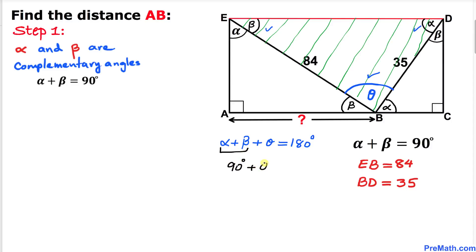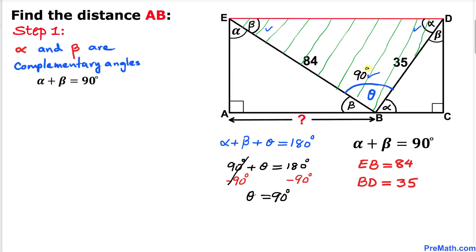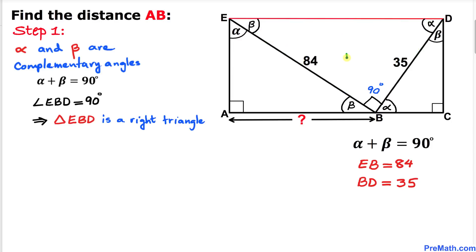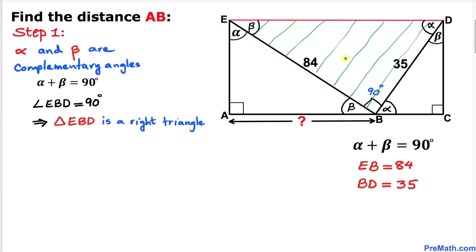Subtracting 90 degrees from both sides, angle theta turns out to be 90 degrees. Therefore triangle EBD is indeed a right triangle.